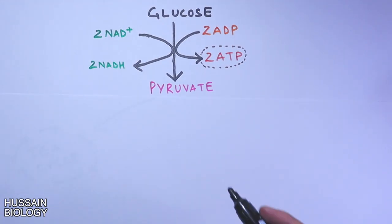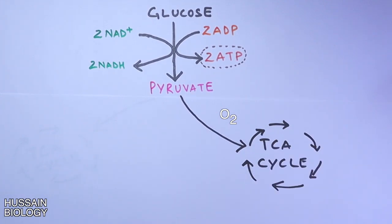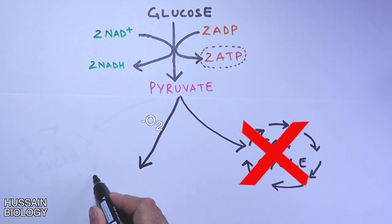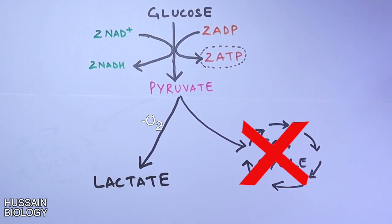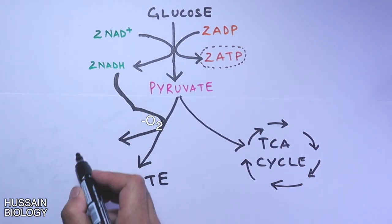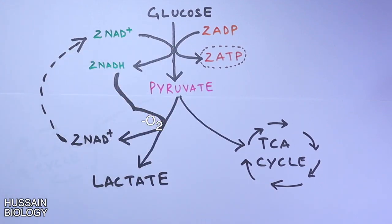Normally, pyruvate enters the TCA cycle (Krebs cycle) followed by oxidative phosphorylation in the presence of oxygen — that is aerobic respiration. When oxygen is absent, pyruvate is sent into fermentation, which is anaerobic respiration. In cancer cells, pyruvate always drives into lactate fermentation: pyruvate is converted into lactate while receiving electrons from NADH produced in glycolysis, and NADH is re-oxidized back into NAD+ for reuse in glycolysis.